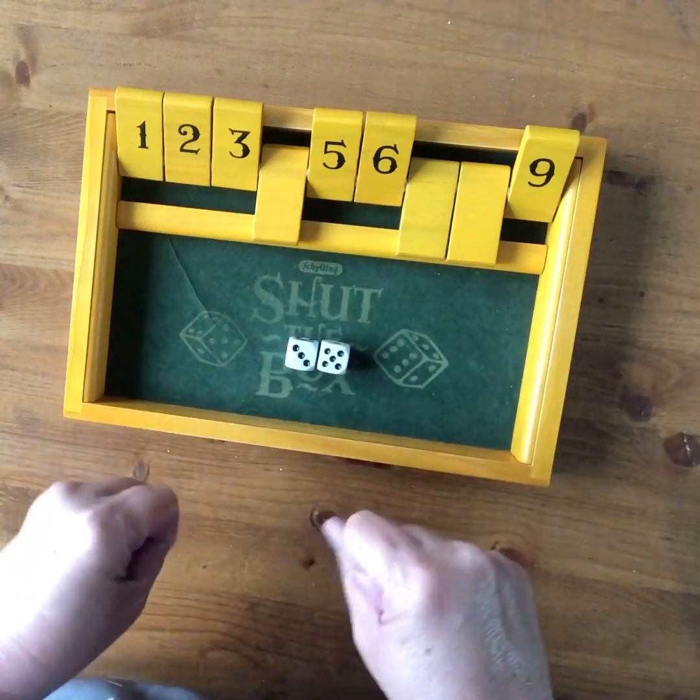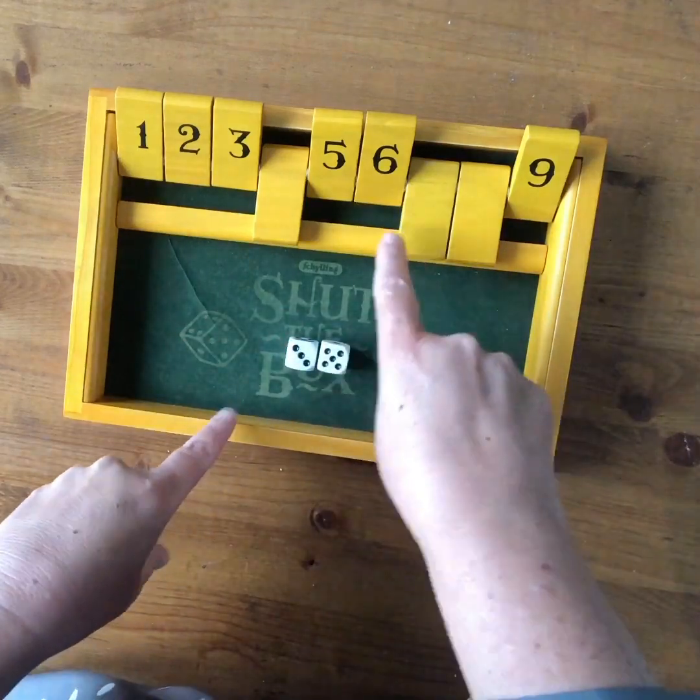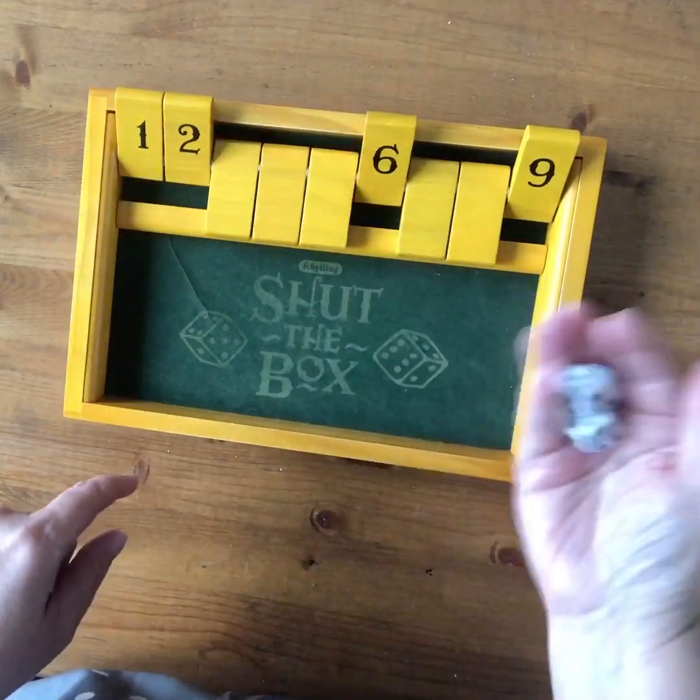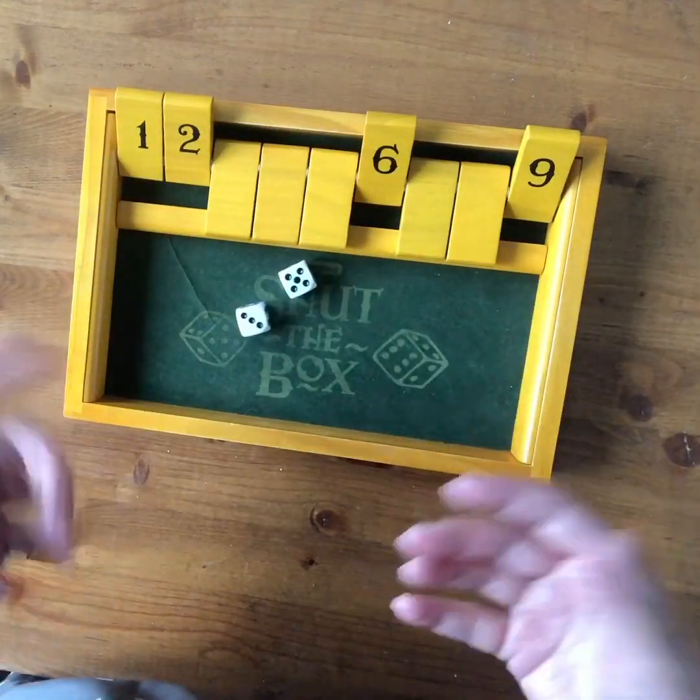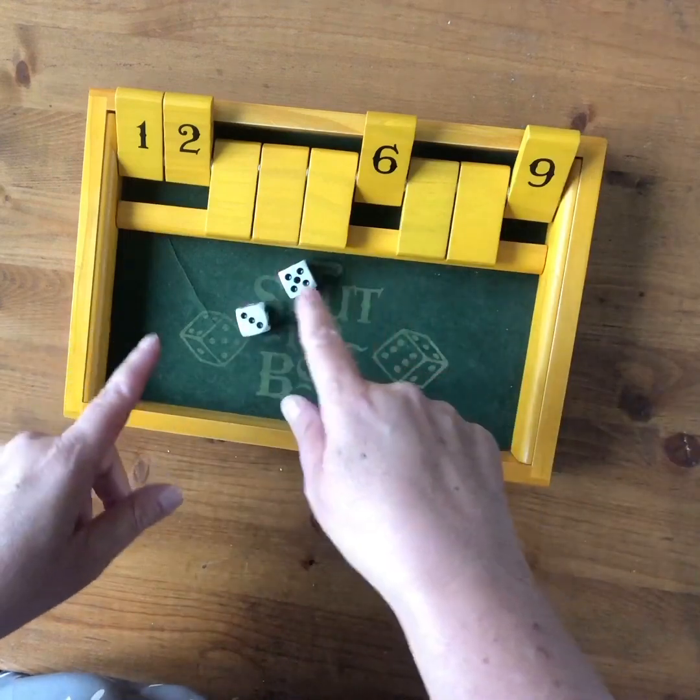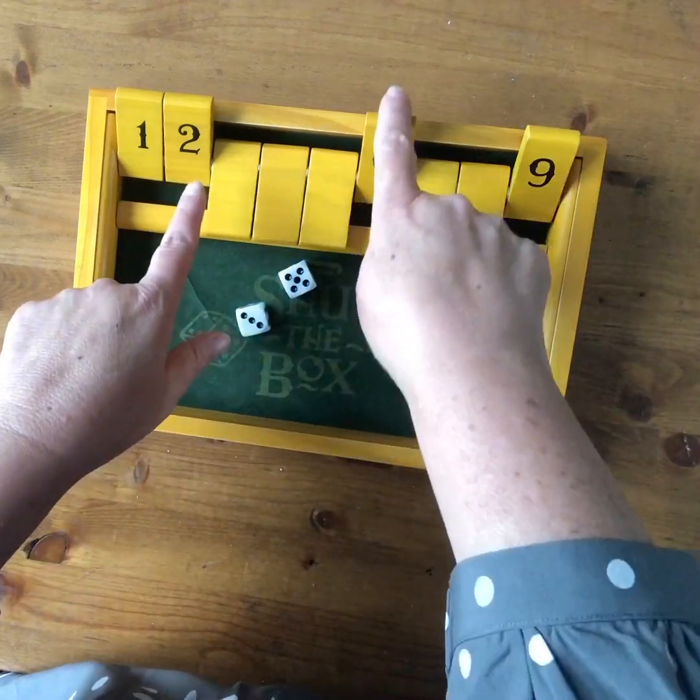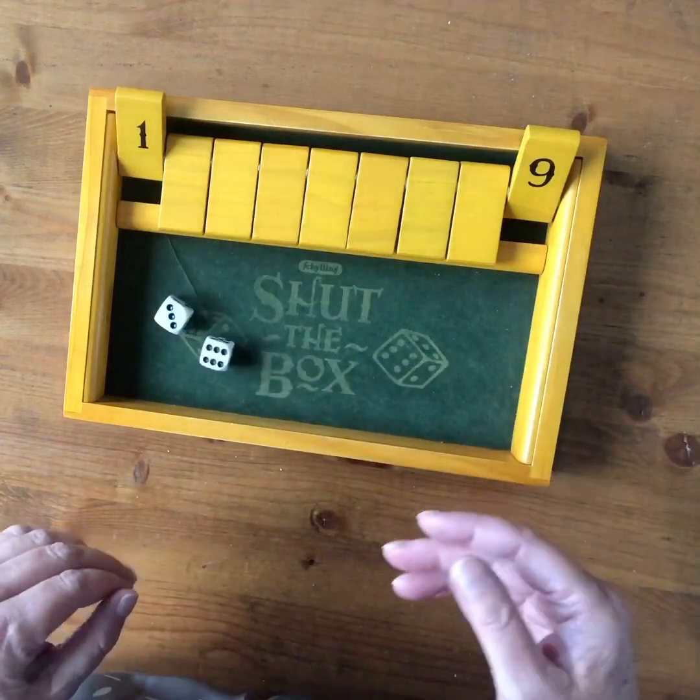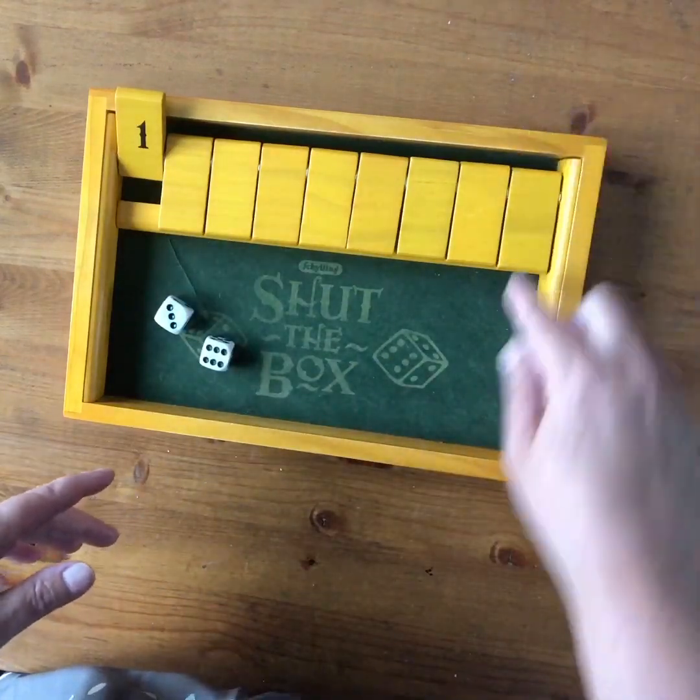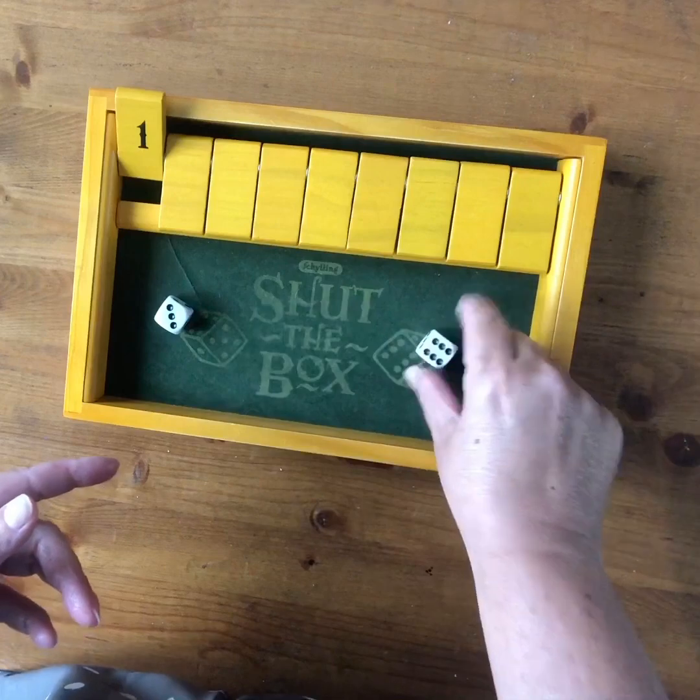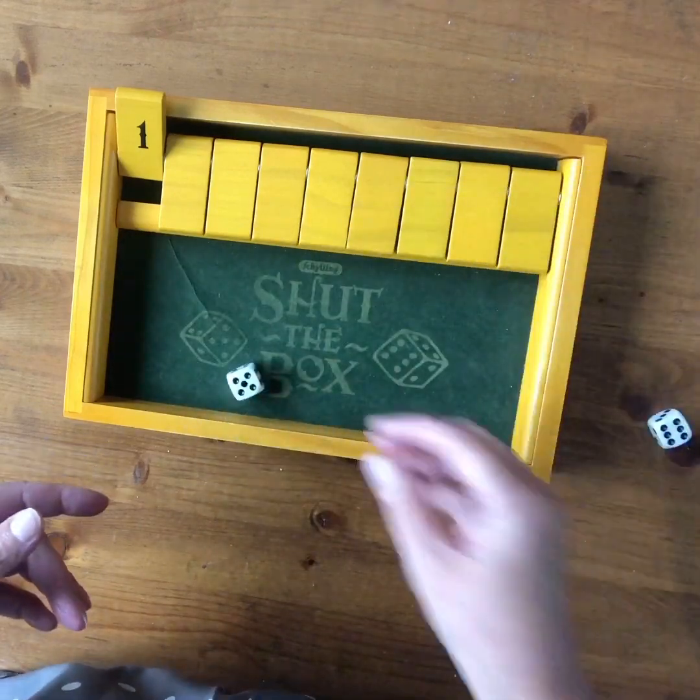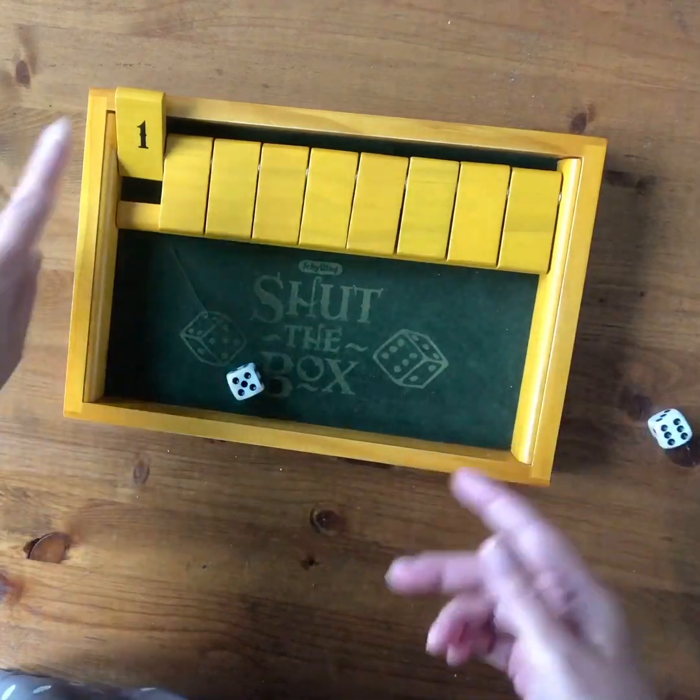So I have an eight again, I've already got my eight down, and so I'm going to go with the five and the three for this turn. And I have an eight again. Still have some ways to make eight here, so I'm going to do six and two again, and I got a nine, so I can turn that down. And now to get the one, I'm only going to roll one dice, and I didn't get it. So my score is one.